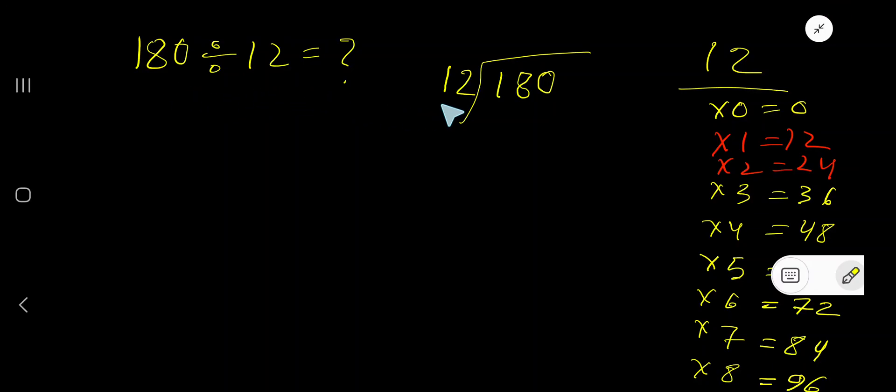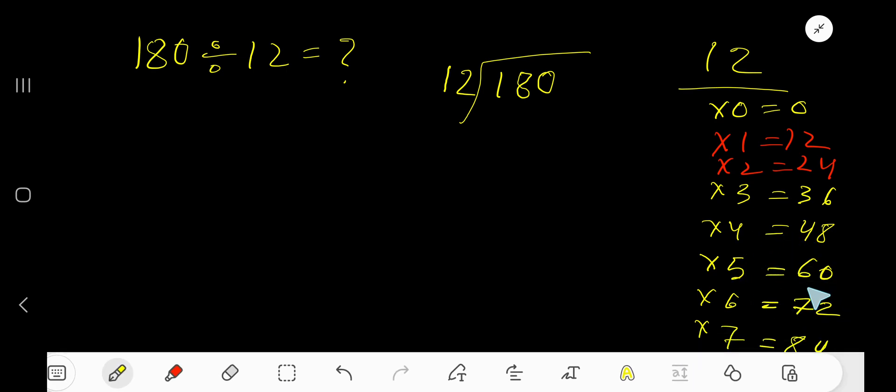180 divided by 12. Here 12 is a divisor, so we need the multiplication table of 12. 12 times 0 is 0, 12 times 1 is 12, 12 times 2 is 24, 12 times 3 is 36, 12 times 4 is 48, 12 times 5 is 60.